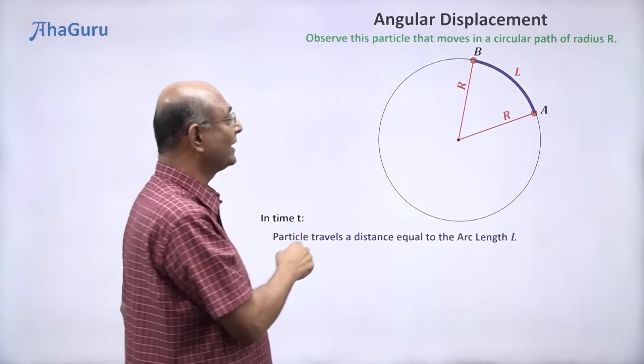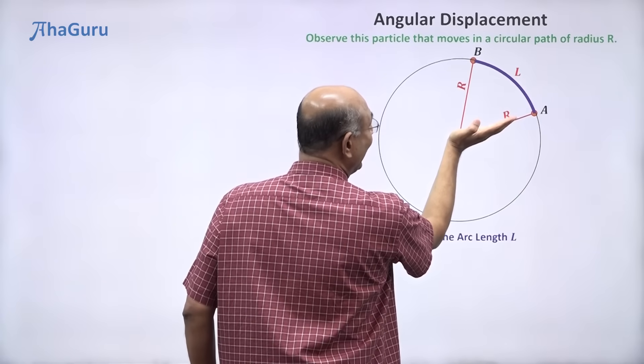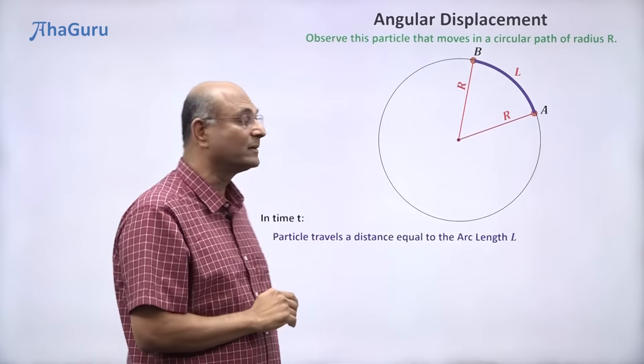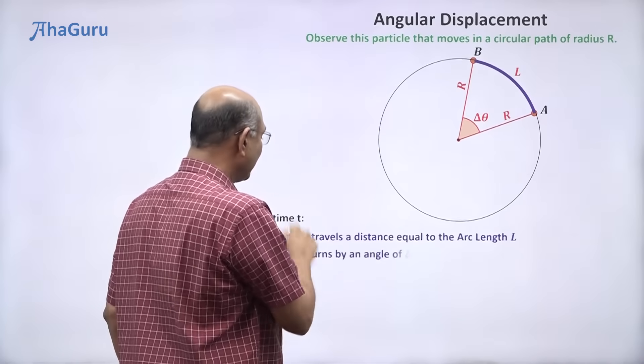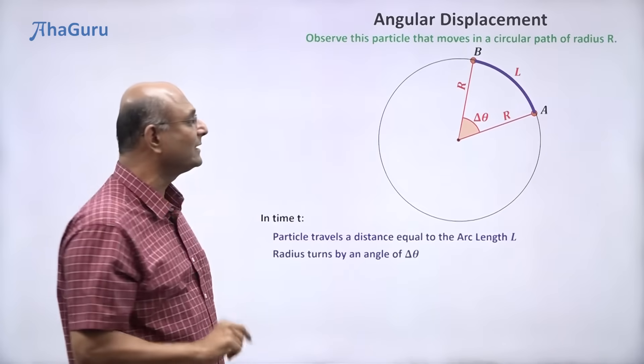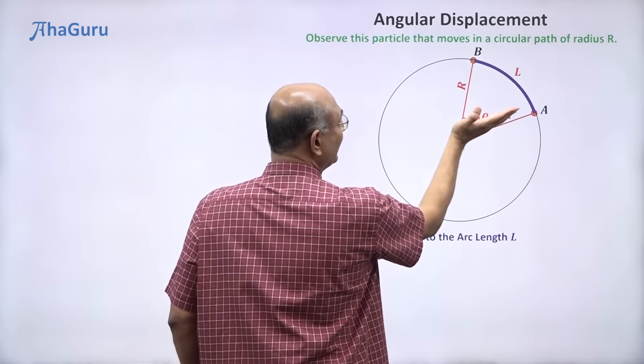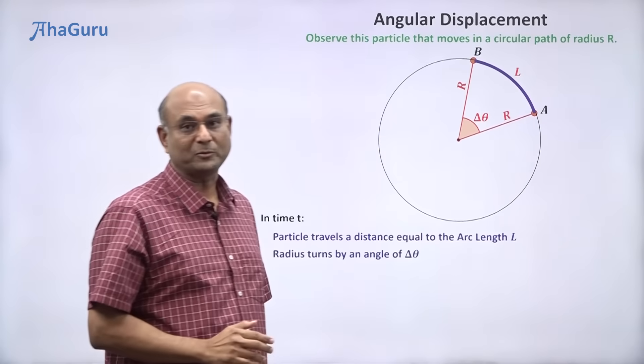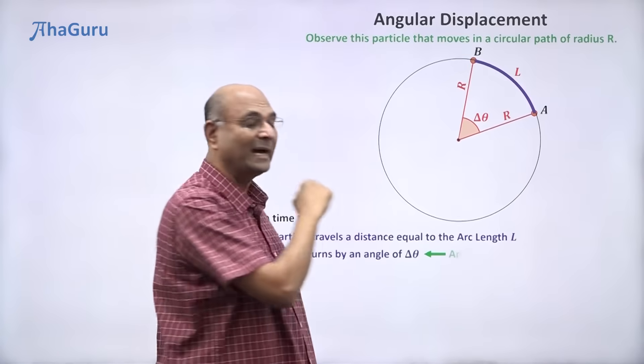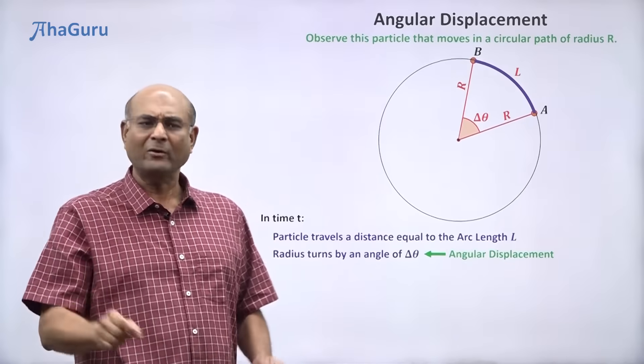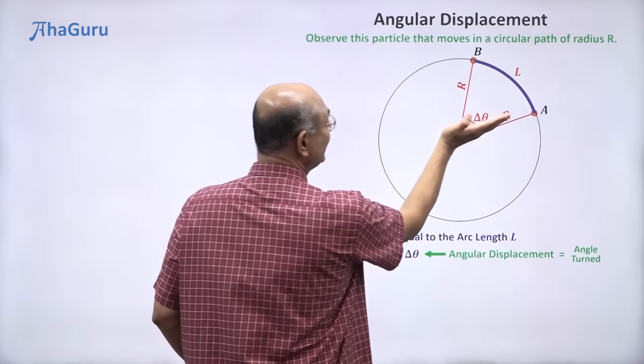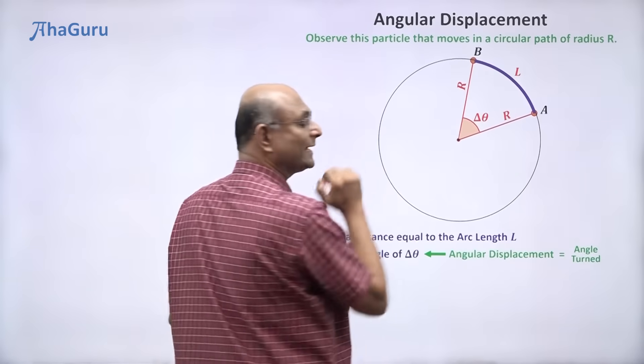But there is a better way to talk about it by looking at the angle that the radius has turned by. So this is delta theta. So we can say the radius has turned by an angle delta theta from a's position to b's position. This delta theta is called the angular displacement. Angular displacement tells us the angle turned by the radius.